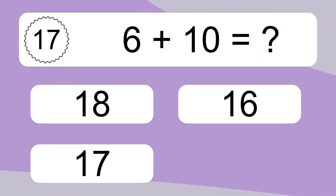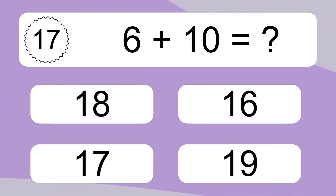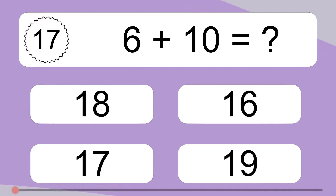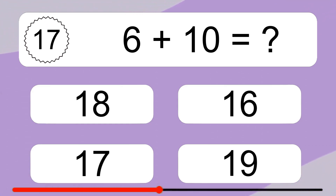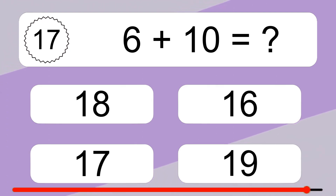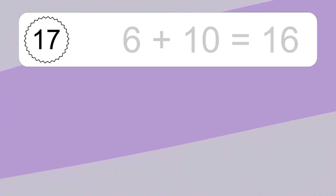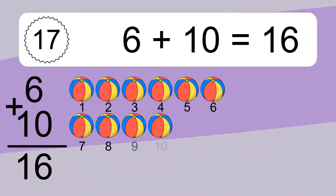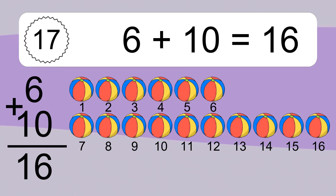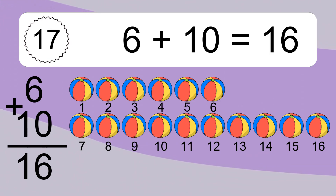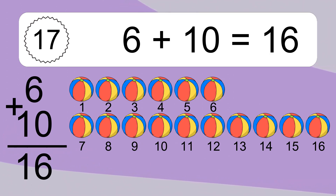6 plus 10 equals what? 6 plus 10 equals 16. Let's count it: 1, 2, 3, 4, 5, 6, 7, 8, 9, 10, 11, 12, 13, 14, 15, 16.